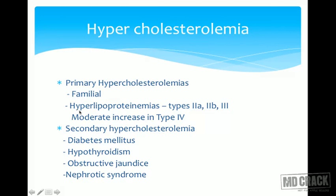Primary hypercholesterolemias are usually familial and include hyperlipoproteinemias types 2a, 2b, and 3, with slight to moderate increases seen in type 4. More common, however, are secondary hypercholesterolemias, where cholesterol increases are not due to genetic or primary hyperlipoproteinemia reasons.